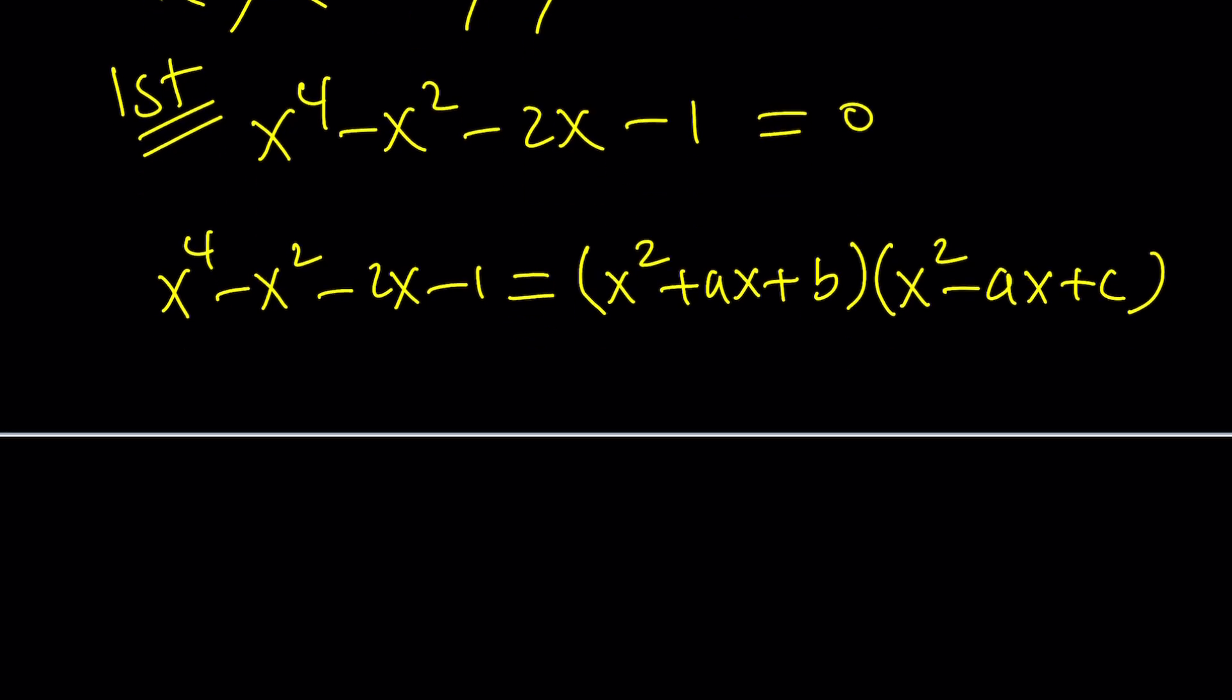When we distribute, we're going to get the following. x to the fourth, x cubed cancels out. Plus cx squared. And now we're done with the x squared. And then ax cubed, we don't worry about it, minus a squared x squared plus acx. And then bx squared minus abx plus bc. We know that bc is negative 1, but can bc be 1 plus minus 1? They can be. That doesn't mean there are rational solutions, but they probably are if there's a good way to factor this.